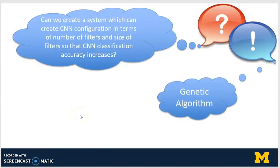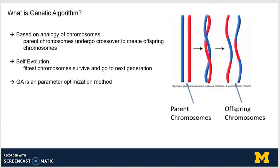Now the question is, can we create a system which can set the CNN configuration in terms of number of filters and size of filters so that the classification accuracy continues to increase? From different findings, I found that genetic algorithms can be used for this problem. A genetic algorithm is based on the analogy of chromosomes, where parent chromosomes undergo crossover to create offspring chromosomes. It is a self-evolution-based algorithm, meaning that with every passing generation it becomes better and better. It eliminates the least fit ones and keeps the highly fit ones into the next generation. It is a parameter optimization approach used for solving several problems, like controller optimization or the traveling salesperson problem.